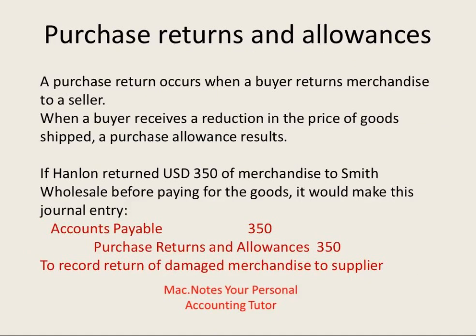The same applies to returns and allowances. If I return some goods, I can reduce my accounts payable by debiting accounts payable, but I credit a separate account to keep track of purchase returns and allowances. I keep track of this credit — for instance, $350 — and it is also a contra account to purchases.